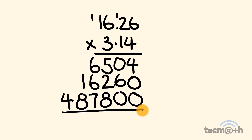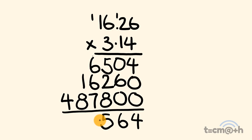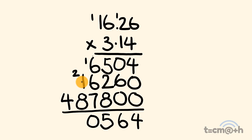Now let's go through and add these. 4 plus 0 plus 0 is equal to 4. 0 plus 6 plus 0 is equal to 6. 5 plus 2 plus 8 is equal to 15 — put the 5 there and carry the 1. Now we have 6 plus 6 is equal to 12, plus 1 is 13, plus 7 is 20 — put the 0 there and carry the 2. We have 2 plus 1 is equal to 3, plus 8 is equal to 11 — so 1 with a 1 carried over. And finally 1 plus 4 is equal to 5.